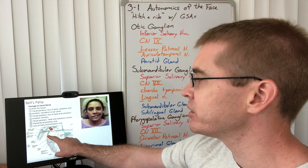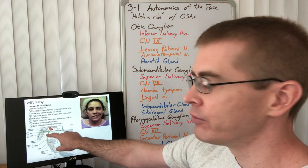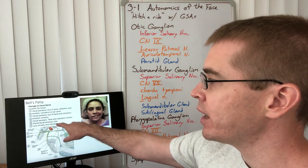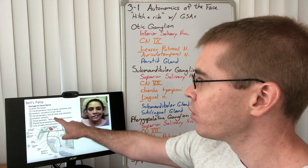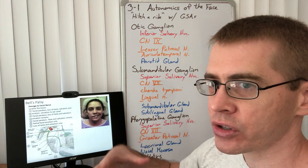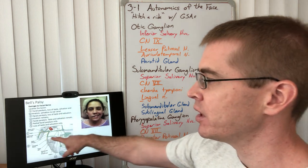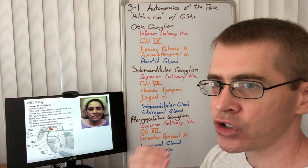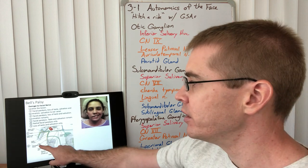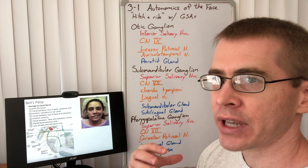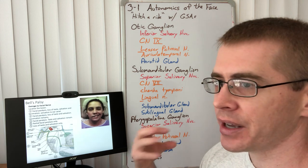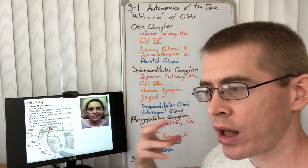If the lesion occurs inside the vertical portion of the facial canal after the genu, you'll get facial paralysis because we're proximal to the stylomastoid foramen. You'll also get loss of taste from chorda tympani and the salivation that comes with it — because if we're above where chorda tympani branches, those fibers are lost. However, lacrimation remains intact because those fibers have already branched off with the greater petrosal nerve at the genu. If the lesion happens at the stylomastoid foramen, you'll have facial paralysis but taste, salivation, and lacrimation all remain.